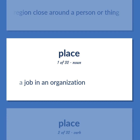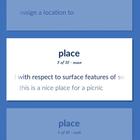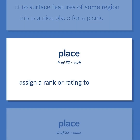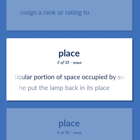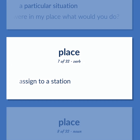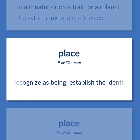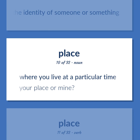Place: a job in an organization. Assign a location to. A point located with respect to surface features of some region — this is a nice place for a picnic. Assign a rank or rating to. The particular portion of space occupied by something — he put the lamp back in its place. A particular situation — if you were in my place, what would you do? Assign to a station. A space reserved for sitting, as in a theater or on a train or airplane — he sat in someone else's place. Recognize as being; establish the identity of someone or something. Where you live at a particular time — your place or mine?